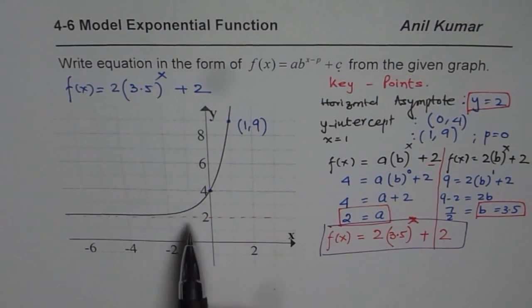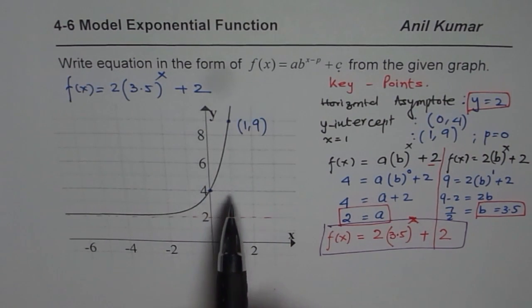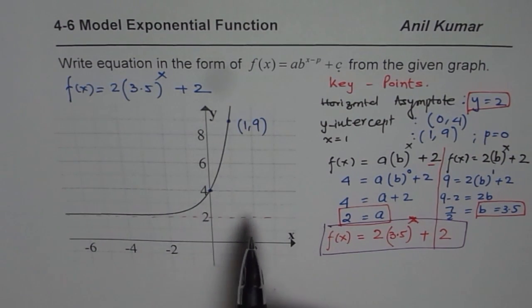So the key points we considered were horizontal asymptote, y-intercept, and any other good point. Better is to take x = 1 and figure it out. That should be good enough to find the equation of an exponential function. Thank you and all the best.